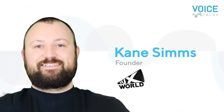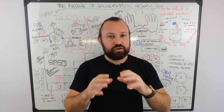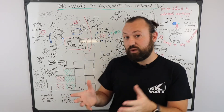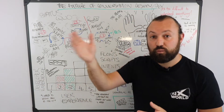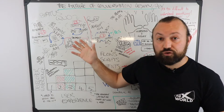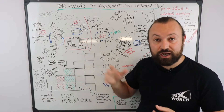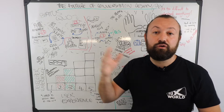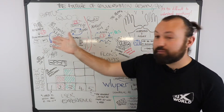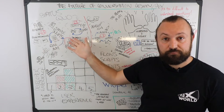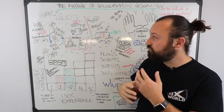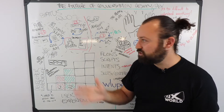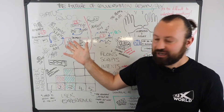Before we get to the future and where things are heading, it's important to really take stock of where we are right now. If we can define where we are, we've got a better grasp on where we might be heading. If you've created conversational applications in the past — maybe you've designed an action for Google Assistant, maybe you've built a chatbot or another kind of voice bot — you might be familiar with this process, which most mature conversational design teams will have.